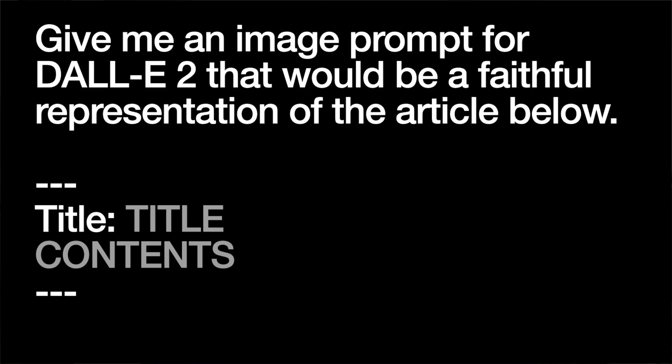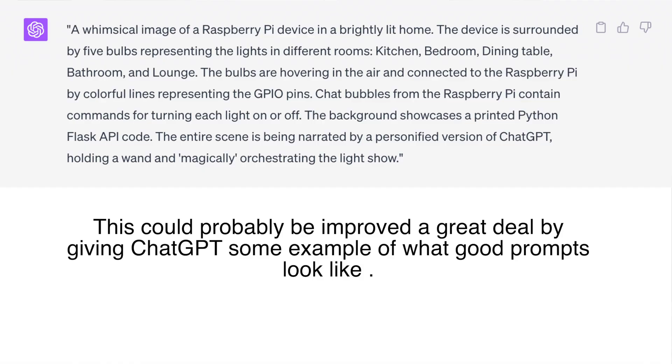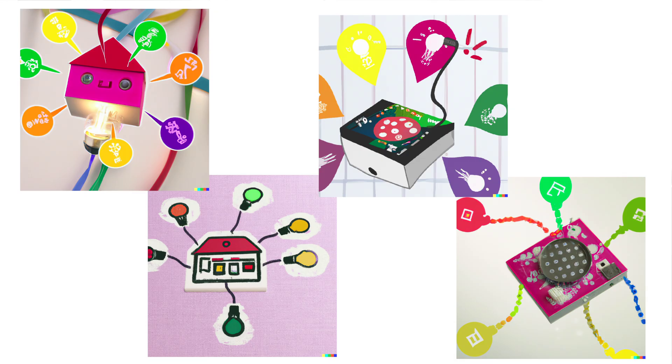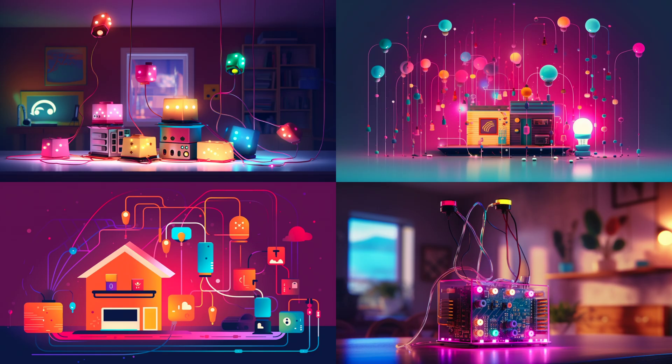We can turn to ChatGPT and ask it to give us a prompt that could be fed into an image generation system. It's not always great at doing this — it often strays into results that are more like briefing a design agency. Here's the output for one of my posts; it's a bit verbose, but we can feed it into something like DALL-E 2. The results are not particularly fantastic, especially when you compare it against something like Midjourney. Midjourney always seems to produce amazing images, even when the prompt is pretty rubbish.